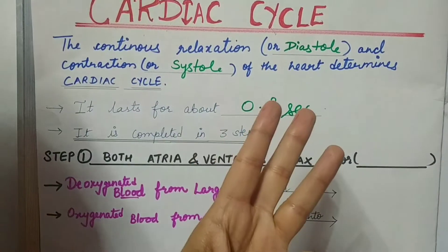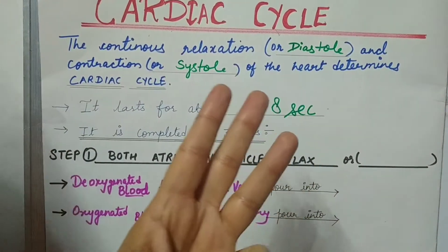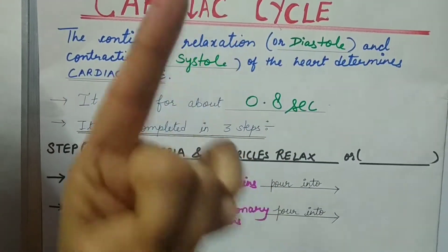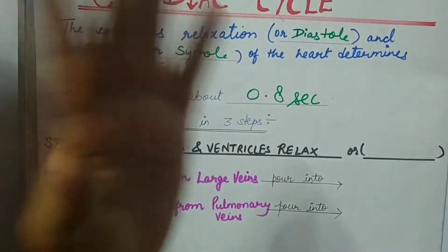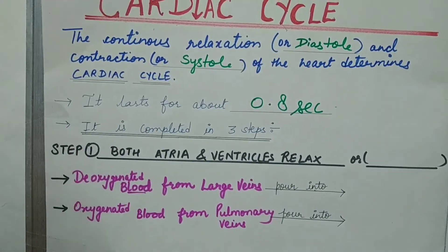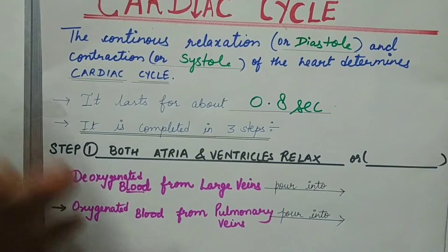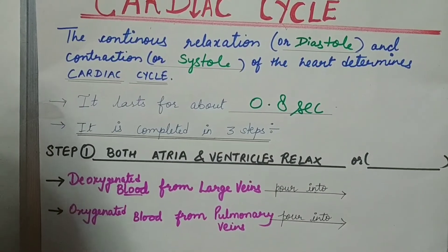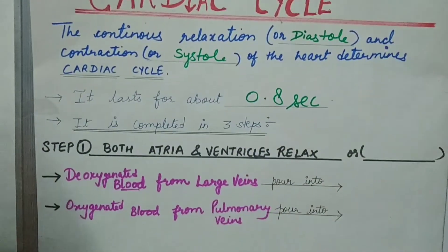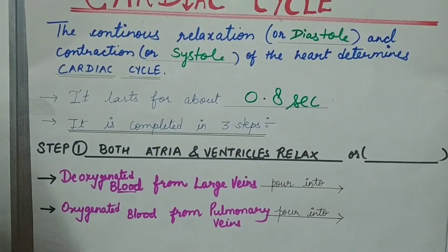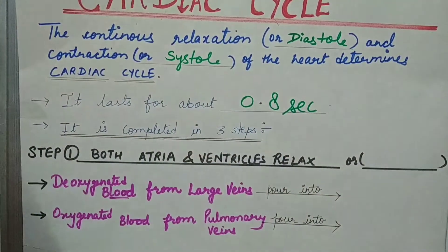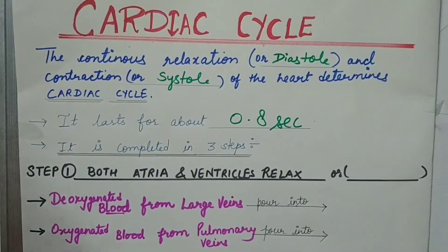Three steps are there, students. First, both atria and ventricles relax — meaning all four chambers are relaxed. Second, both atria contract. Third, both ventricles contract.